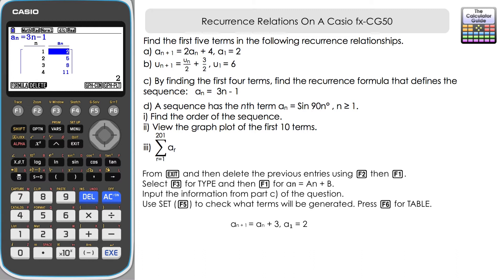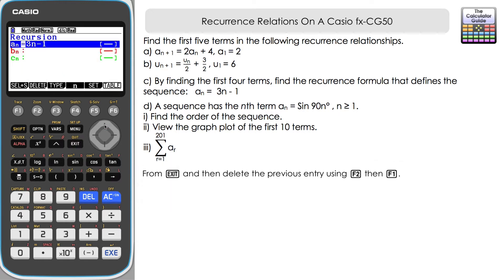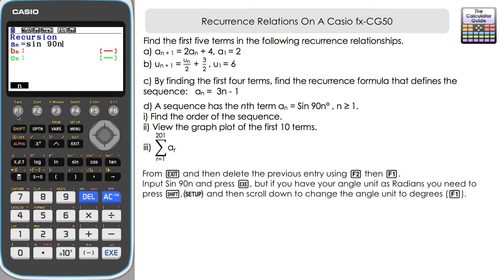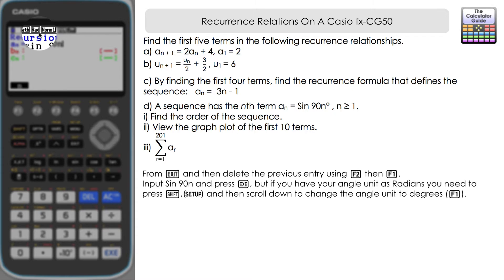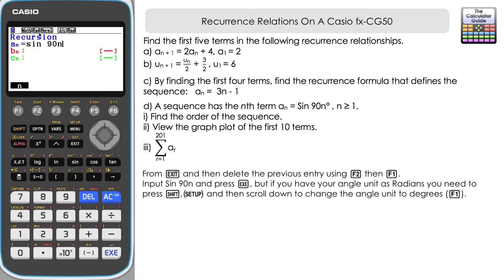For part D, a sequence has the nth term A_n = sin(90n°) where n ≥ 1. We need to find the order of the sequence, view a graph plot of the first 10 terms, and find the sum of A_r from r = 1 to 201. Let's exit and delete the current A_n entry so we can use that slot, keeping it in line with the question. This time A_n = sin(90n), so enter sine 90 then F1 to get n.